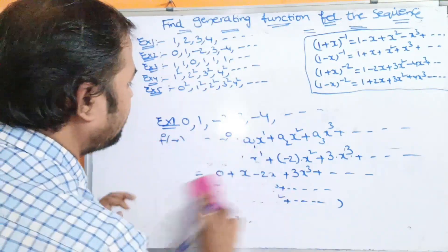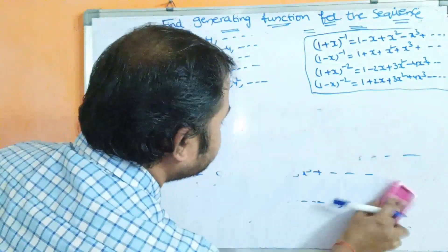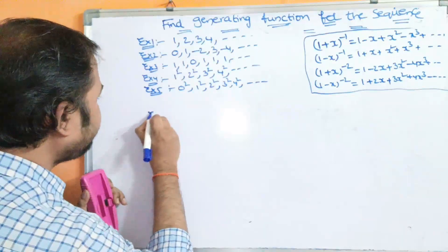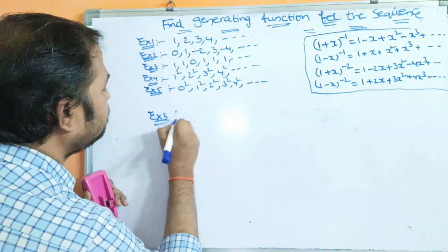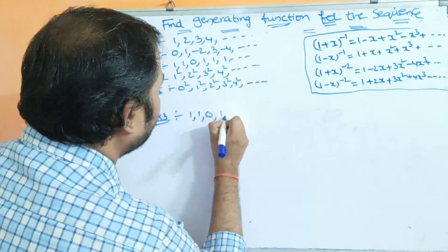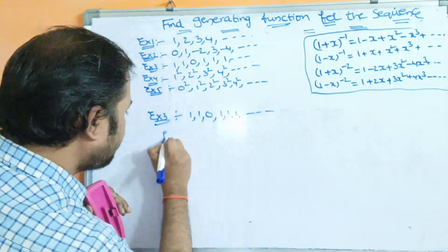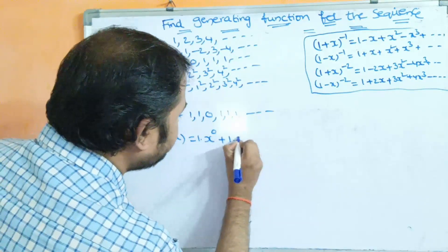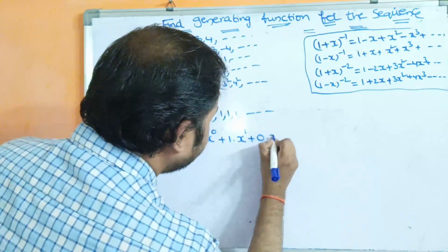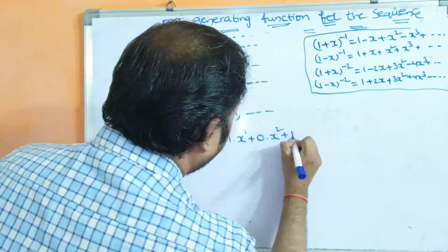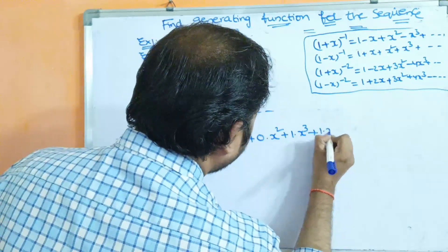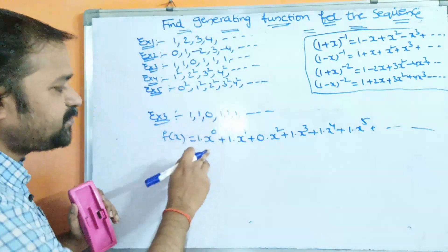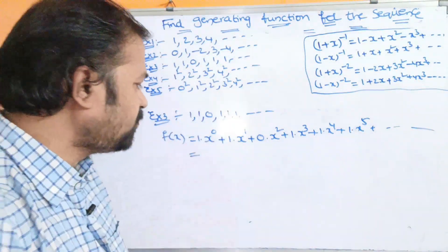Let us solve the remaining examples. The third example is the sequence 1, 1, 0, 1, 1, 1 and so on. So f(x) = 1·x⁰ + 1·x¹ + 0·x² + 1·x³ + 1·x⁴ + 1·x⁵ + ...